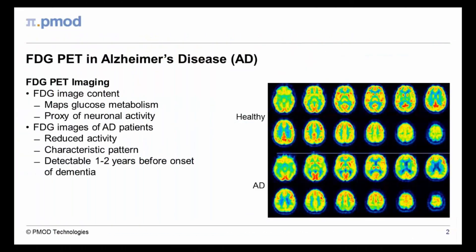FDG brain PET images map local glucose metabolism, which can be considered as a proxy for neuronal activity. Impaired neuronal activity and neuronal loss are reflected by a reduced FDG uptake in the affected brain areas. In patients suffering from Alzheimer's disease, the reduction in uptake is evident as a characteristic pattern.